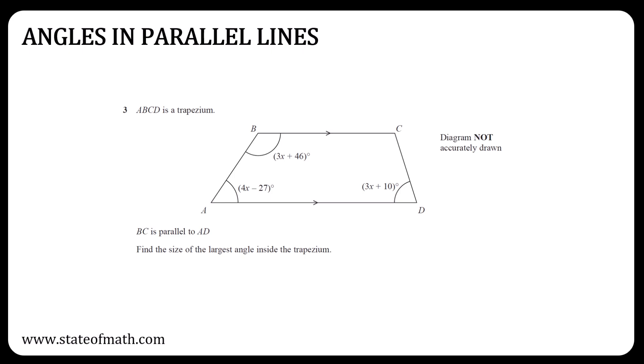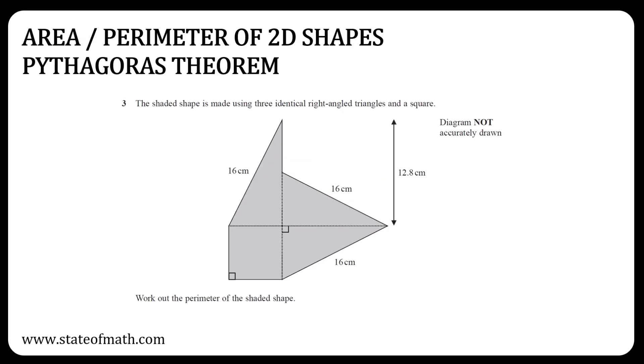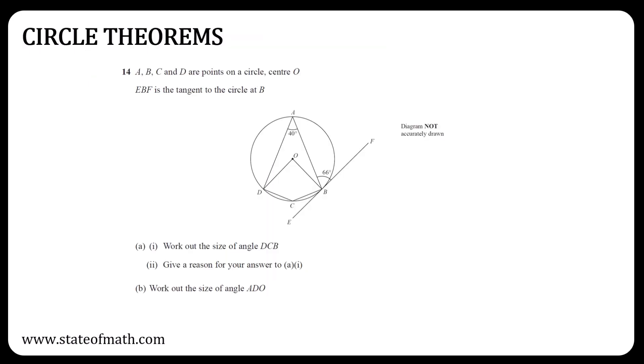No question in Paper 1H for angles in parallel lines, so learn the rules because sometimes you are asked to give reasons as well. In Paper 1H you were asked to find the area of a trapezium and also the area of a sector. In Paper 2H you could be asked to find the perimeter of a compound shape.